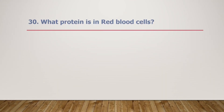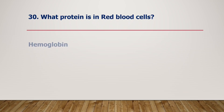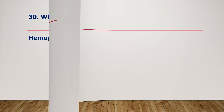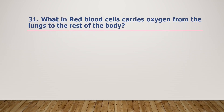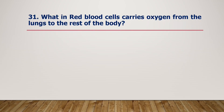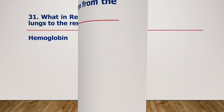What protein is in red blood cells? Hemoglobin is in red blood cells. What in red blood cells carries oxygen from the lungs to the rest of the body? Hemoglobin carries oxygen from the lungs to the rest of the body.